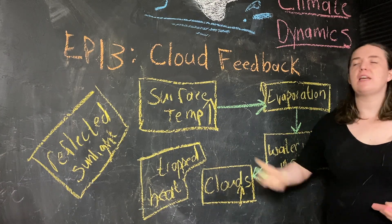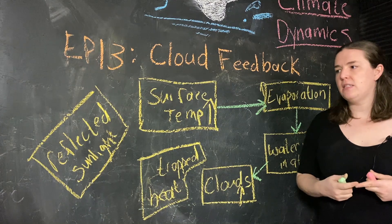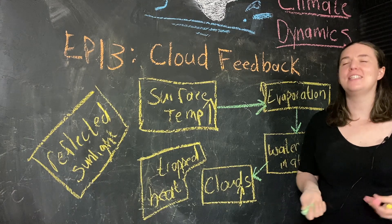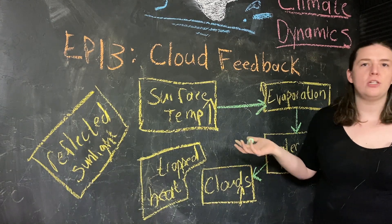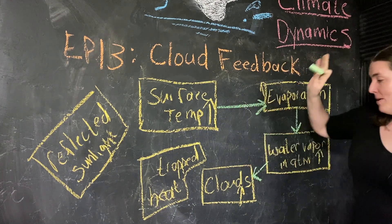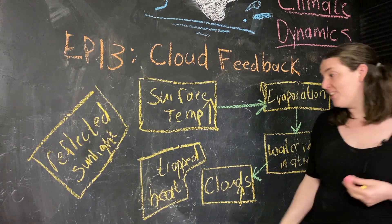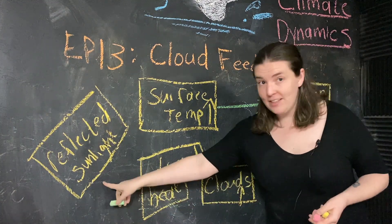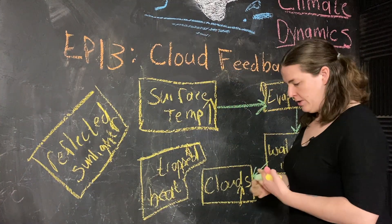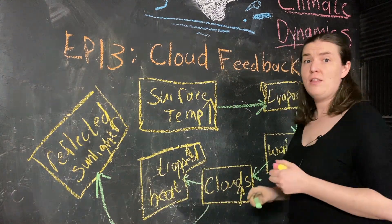There's a whole section on clouds in the IPCC report. IPCC is the Intergovernmental Panel on Climate Change — it's an organization through the UN. Anyway, out of the footnote: more clouds and increased cloud cover will both increase the trapped heat and the reflected sunlight. So both of these go up — a positive connection for trapped heat and a positive connection for reflected sunlight.